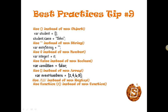Best practices tip number nine: always use curly braces instead of 'new Object'. Similarly, initialize a string with empty quotes instead of 'new String', use zero instead of 'new Number', use false instead of 'new Boolean', use square brackets instead of 'new Array', and use a function expression for functions as we will see in jQuery.